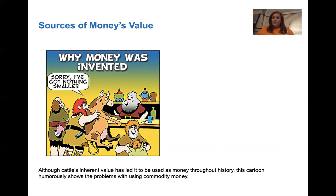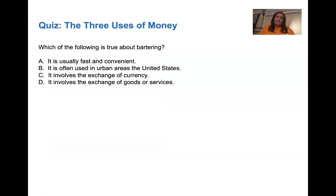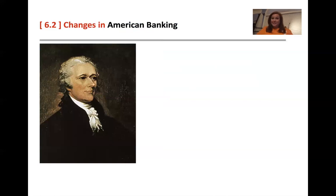Money used to be backed by gold. You'd carry a gold nugget around — 'That's $10, let me chip off $10 worth of gold' — it's not practical. So what happened was you'd put your gold in the bank and the bank gave you notes or money to represent the amount of gold you had in the bank. And that is lesson 6-1. See you back for 6-2.